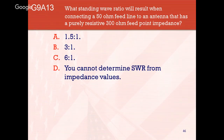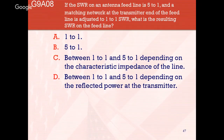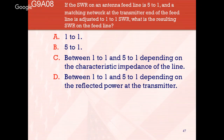Connecting a 50-ohm feed line to an antenna with a purely resistive 300-ohm feed point impedance: divide 50 ohms into 300 to get a 6:1 SWR. If the SWR on an antenna feed line is 5:1 and a matching network at the transmitter end is adjusted to 1:1 SWR, the resulting SWR on the feed line is still 5:1 — SWR is determined only by the load, and that answer is given right in the question.